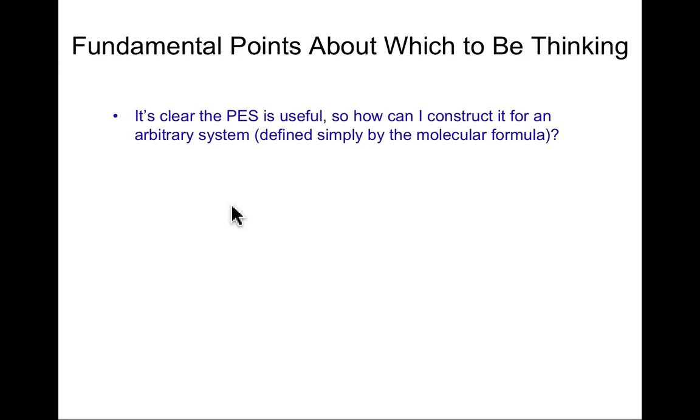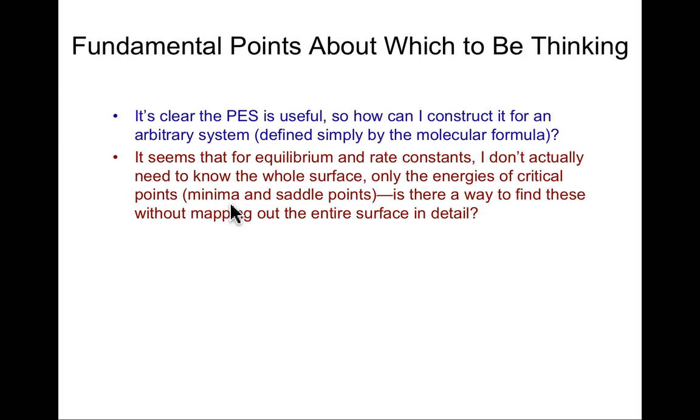For an arbitrary system, the potential energy surface is defined by a molecular formula. But when it comes to understanding equilibria and rate constants, we don't really need to know the whole potential energy surface, which is typically very high dimensionality. What we really want are critical points - minima and saddle points and their relationship one to another. If we could find those as priority regions of the potential energy surface, as opposed to having to have the entire surface, that might be relatively helpful and efficient.